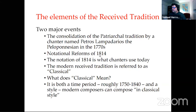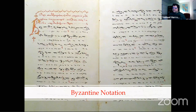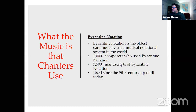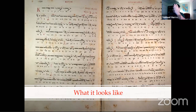Byzantine notation is the oldest continuously used musical notational system in the world today — by far. It has over 1,000 known composers, over 7,500 manuscripts found so far with more being added, and has been used since the ninth century up until today. The notation separates the text on the bottom from the music signs on top.